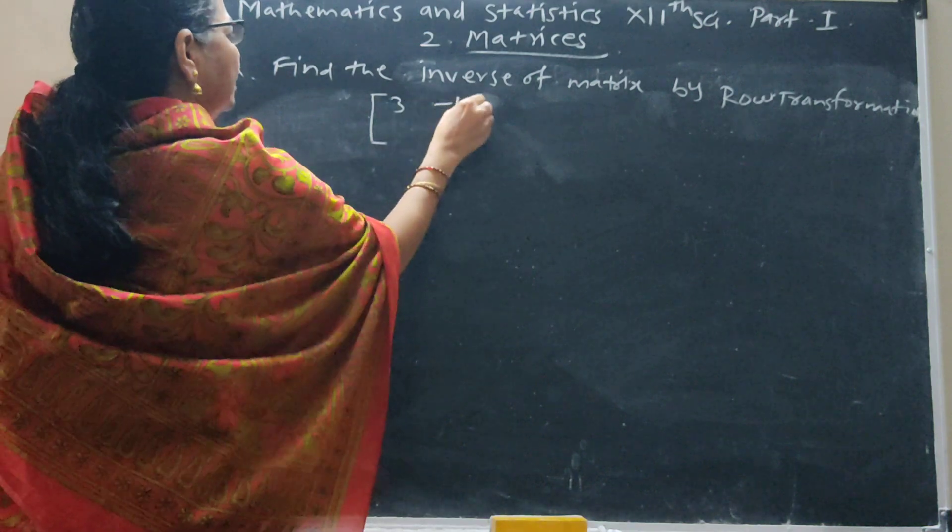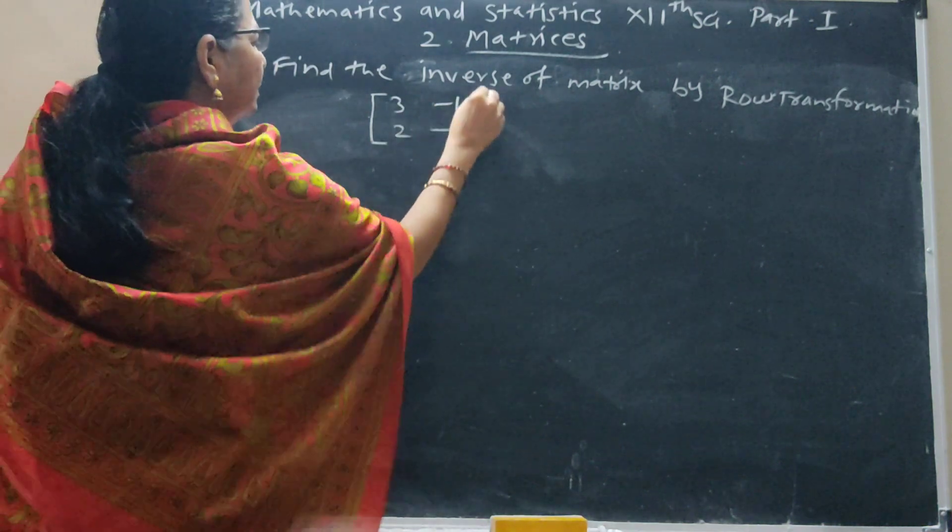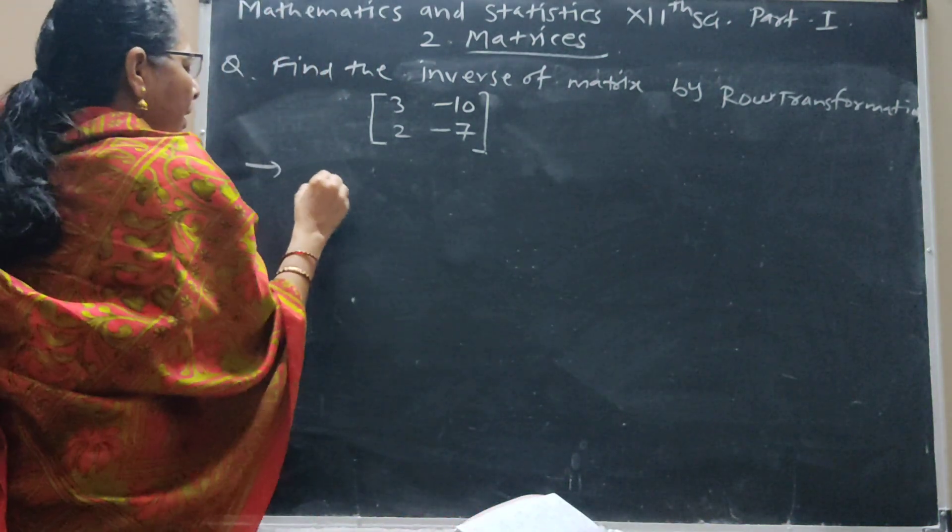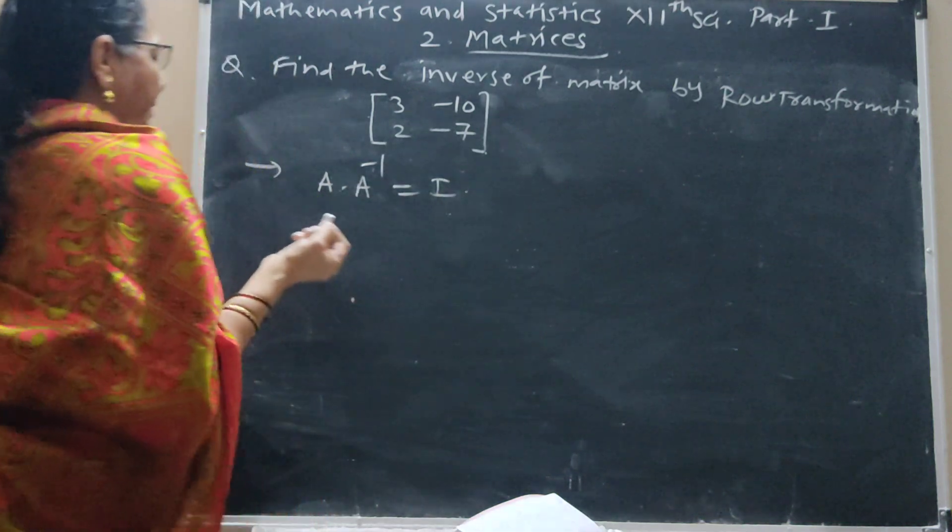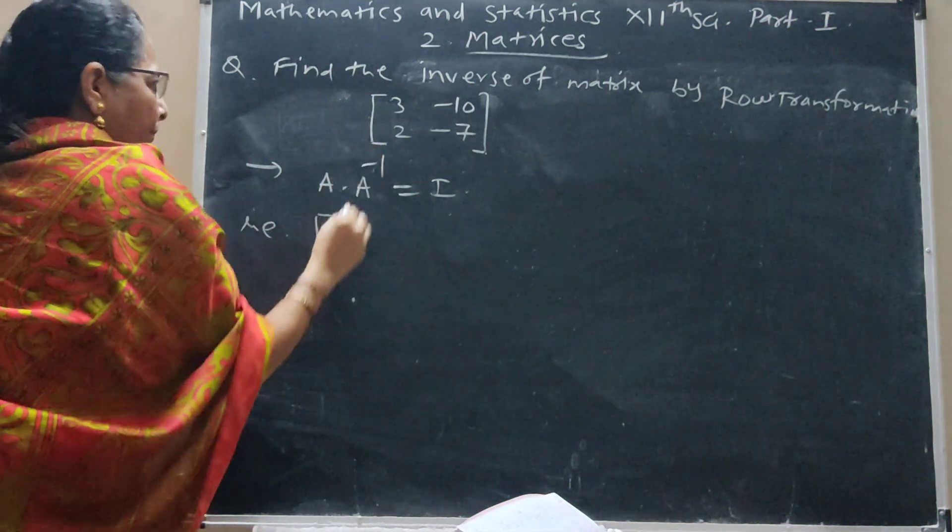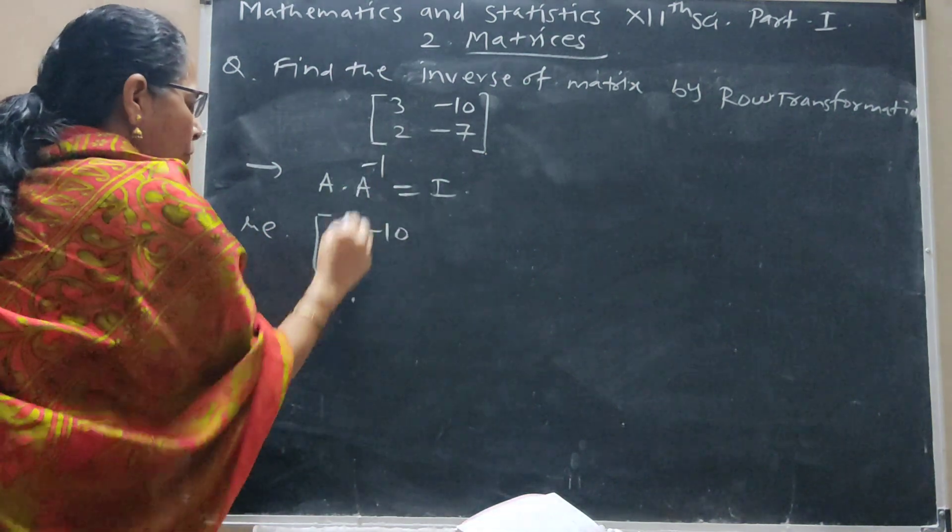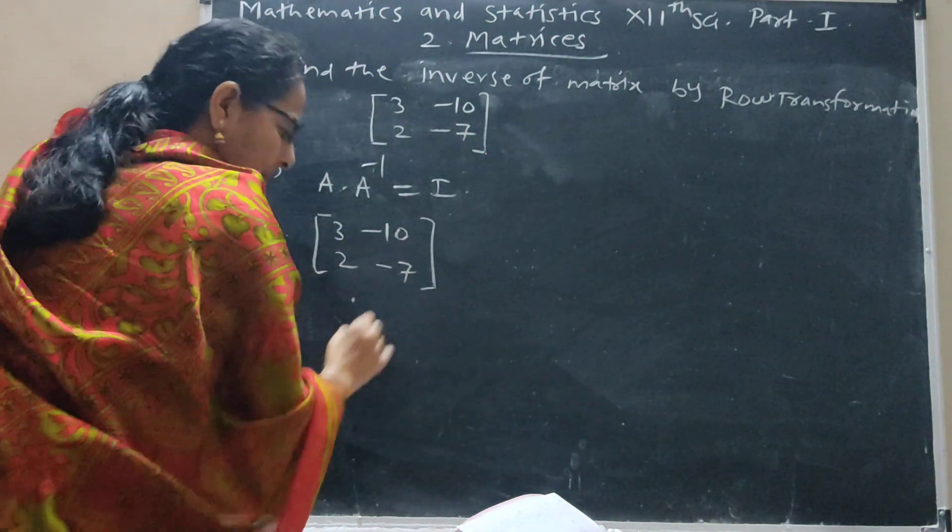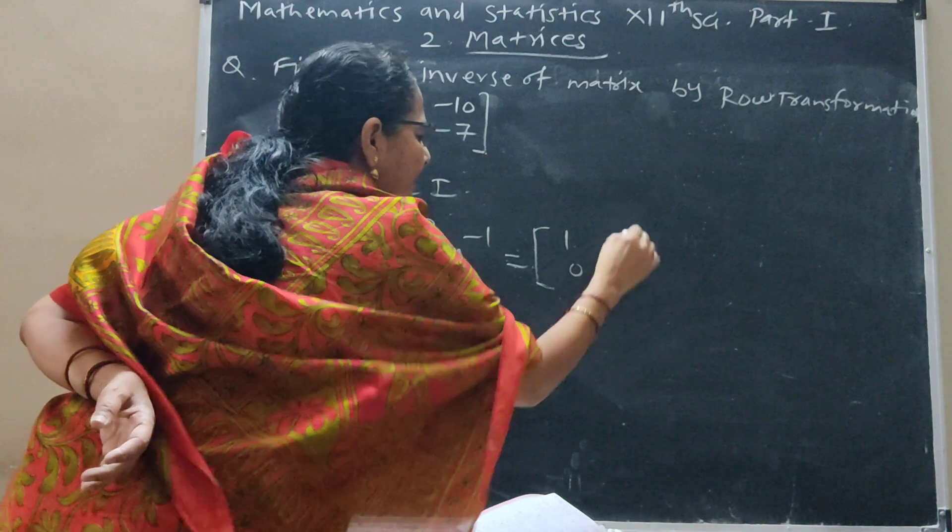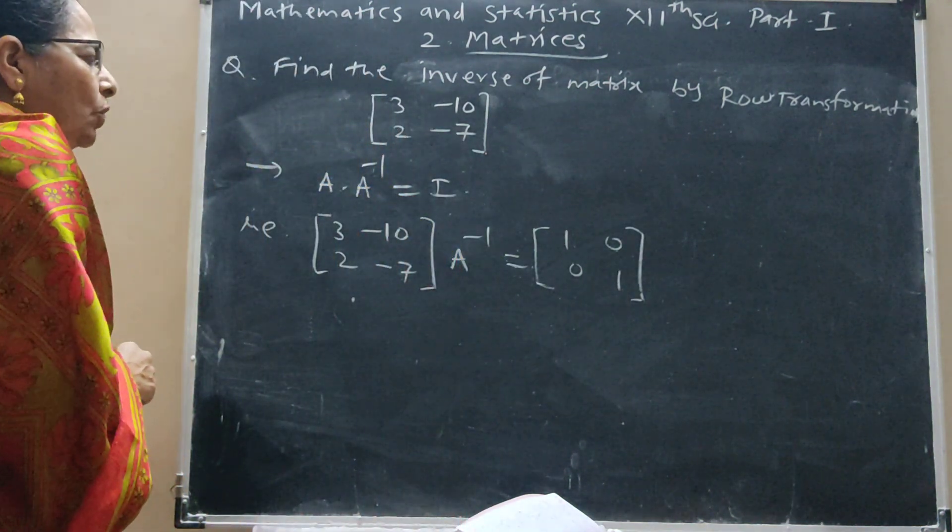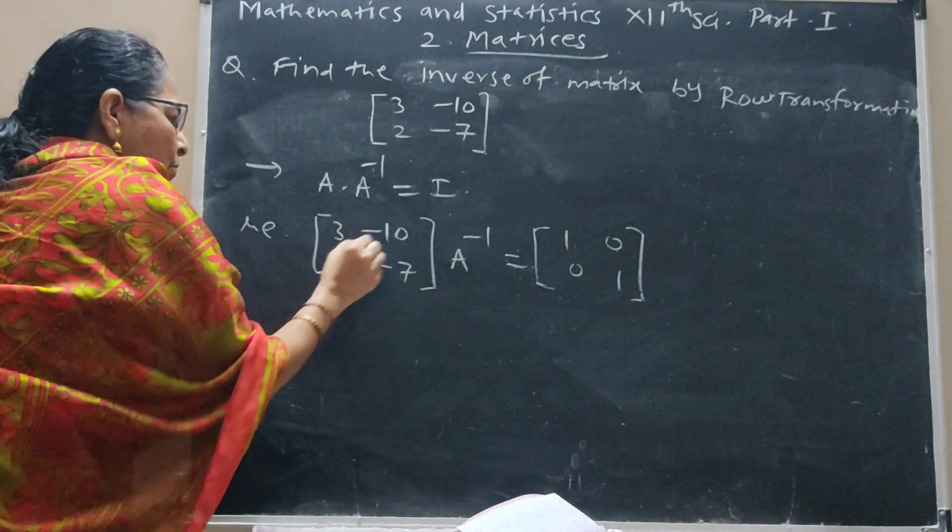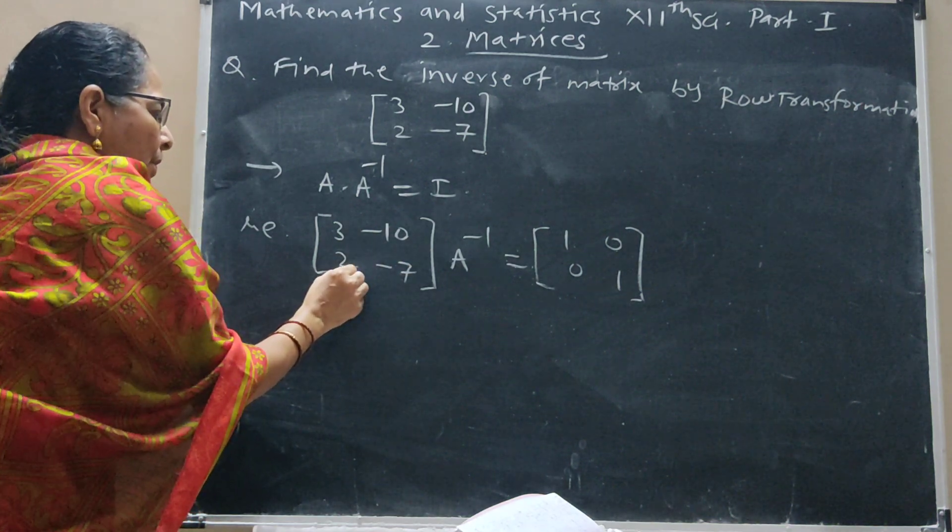Matrix is [3 -10; 2 -7]. By row transformation, we have to take A into A inverse equals I. That is, A is [3 -10; 2 -7], inverse is equal to I, which is [1 0; 0 1]. Now take row operations. We have to take here 0, so [1 0; 0 1]. 0 here will be required, therefore we have to take row operations.